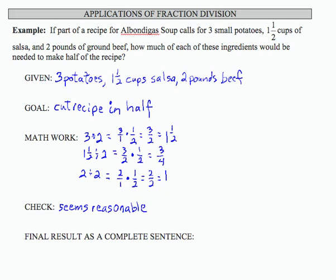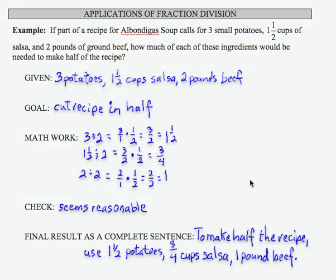So let's take one more step and write our final result as a complete sentence. To make half the recipe then, we're going to use one and a half potatoes, three quarter cups of salsa, and one pound of beef.